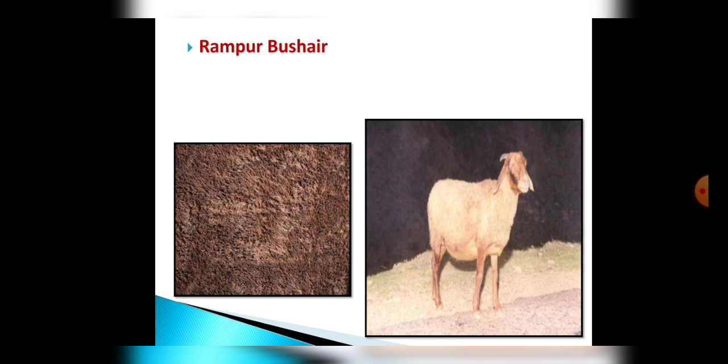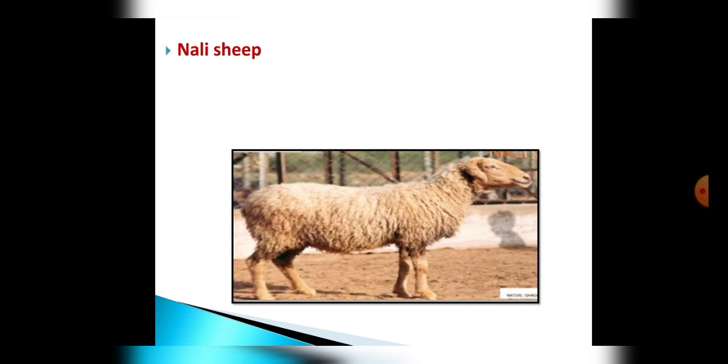The second picture is the breed of Rampur Bhushair, which gives us a brownie fleece type of wool which is very soft. It is found in Uttar Pradesh and Himachal Pradesh.